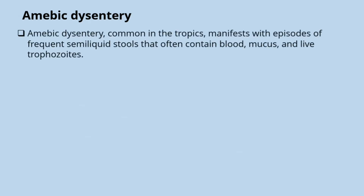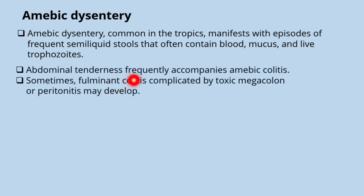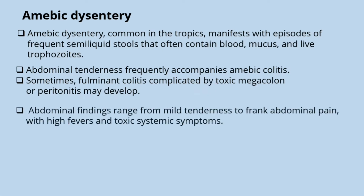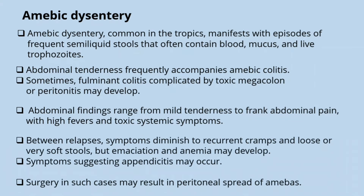Amoebic dysentery is common in the tropics and manifests with episodes of frequent semi-liquid stools that often contain blood, mucus, and live trophozoites. Abdominal tenderness frequently accompanies amoebic colitis. Sometimes fulminant colitis complicated by toxic megacolon or peritonitis may develop. Abdominal findings range from mild tenderness to frank abdominal pain with high fevers and toxic systemic symptoms. Between relapses, symptoms diminish to recurrent cramps and loose or soft stools, but emaciation and anemia may develop.